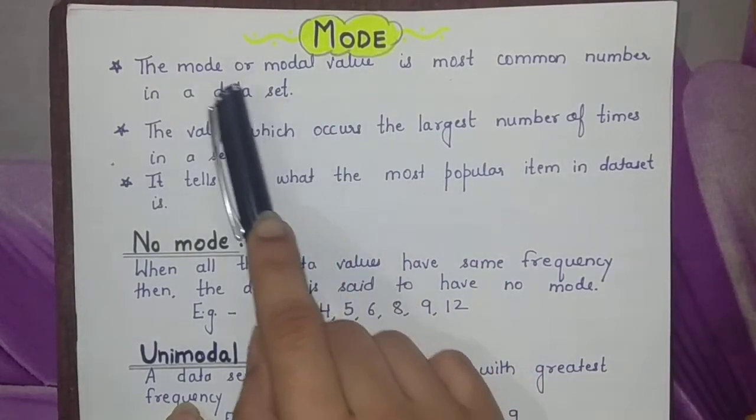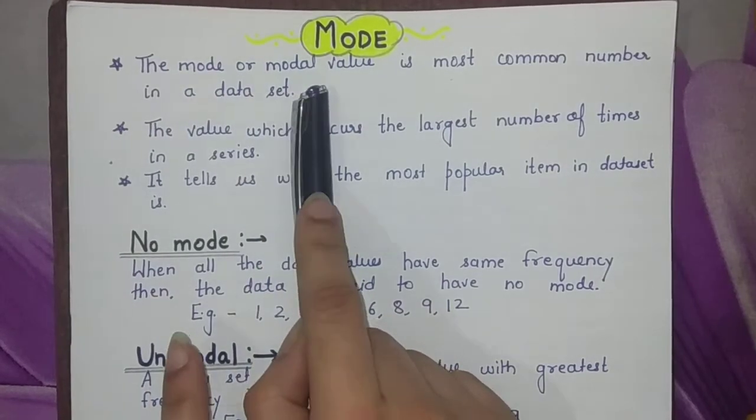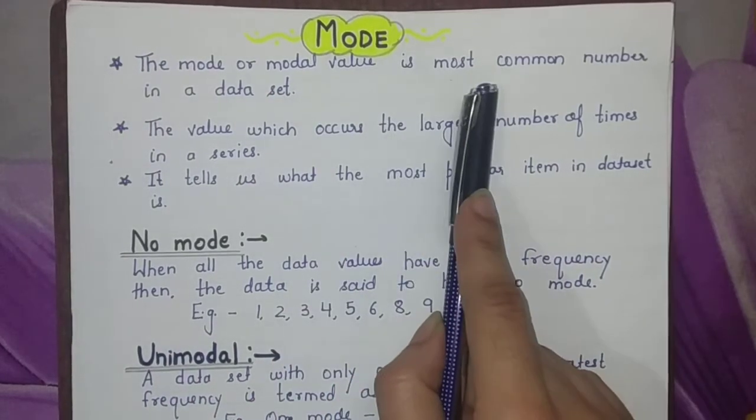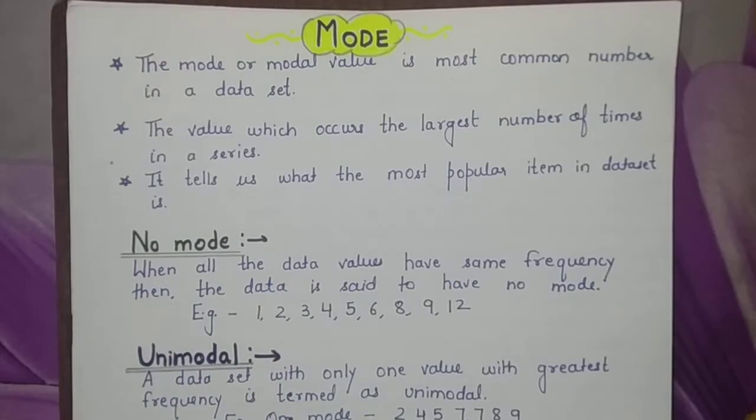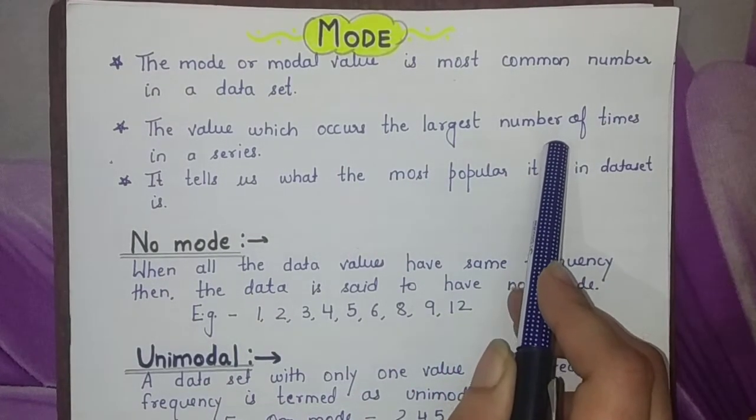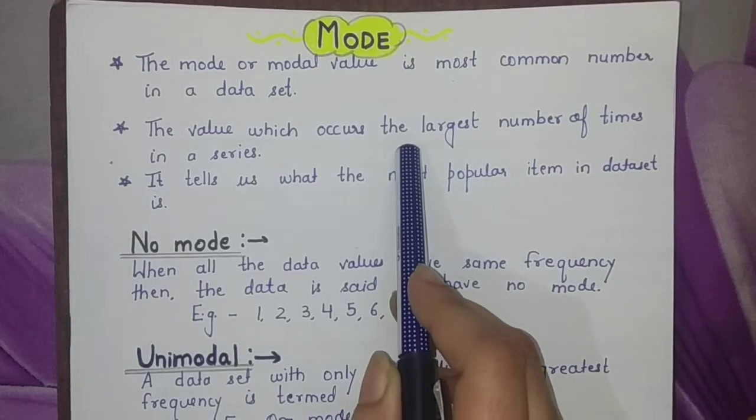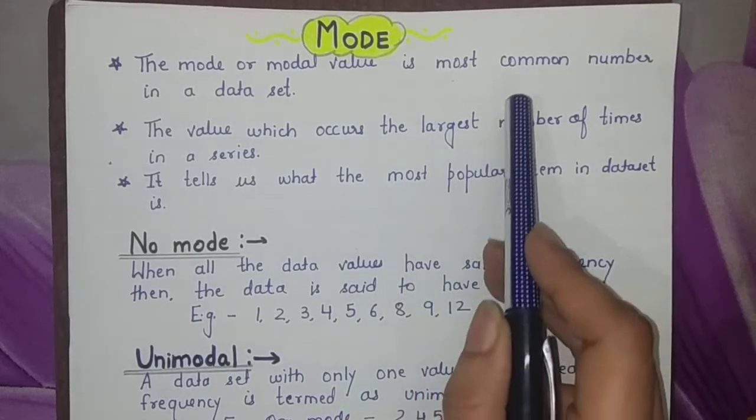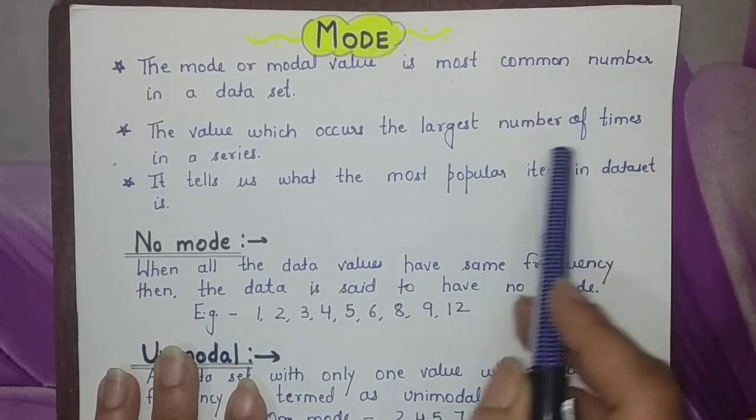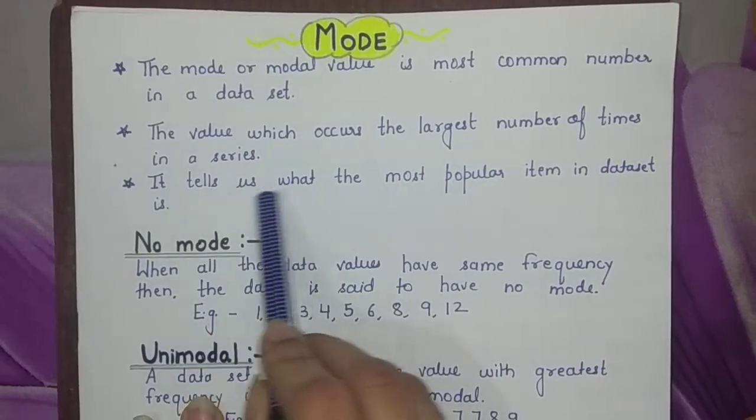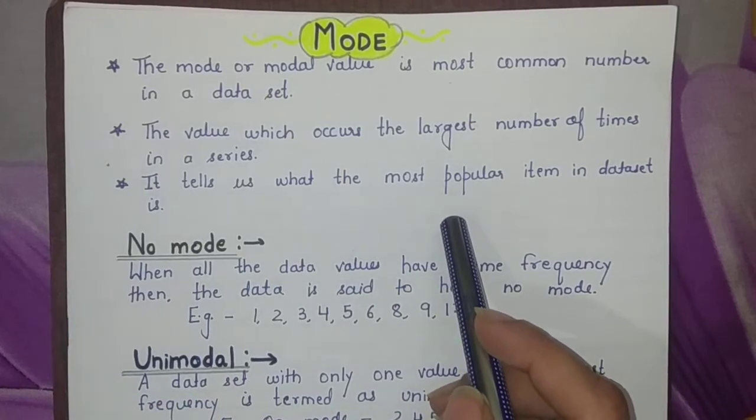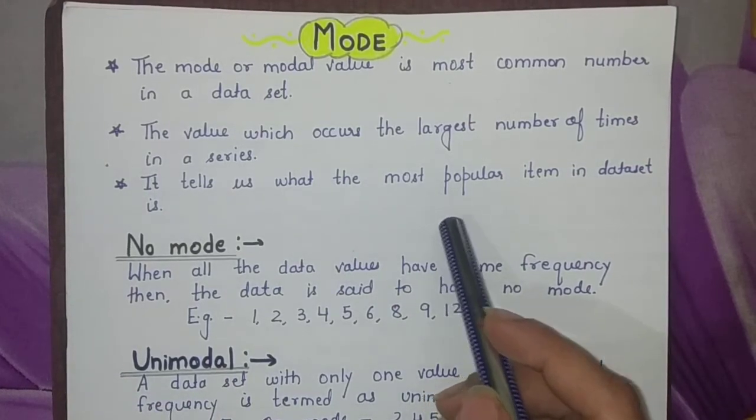So what is mode? The mode, also called modal value, is the most common number in a data set. By most common number I mean the value that occurs the largest number of times in a series. It tells us what is the most popular item in the data set.